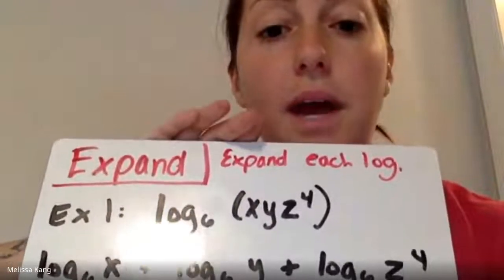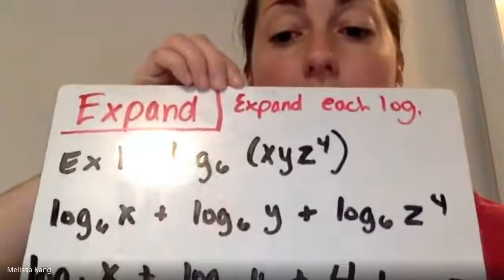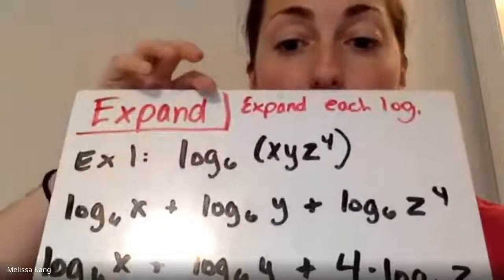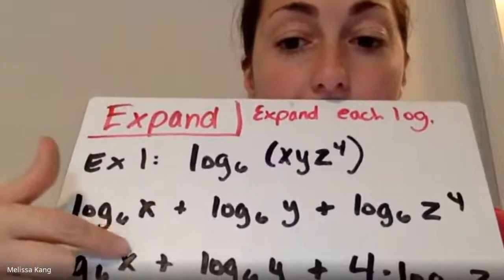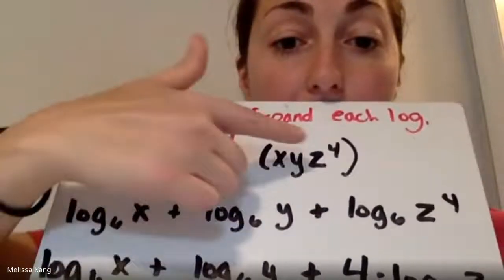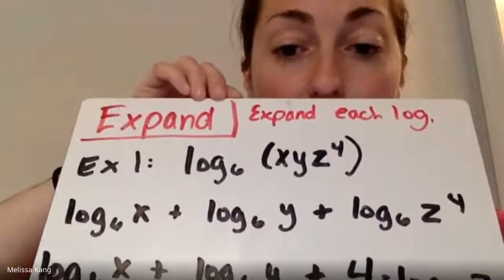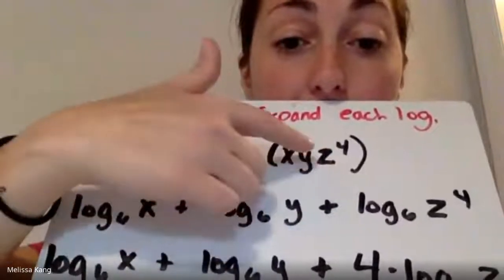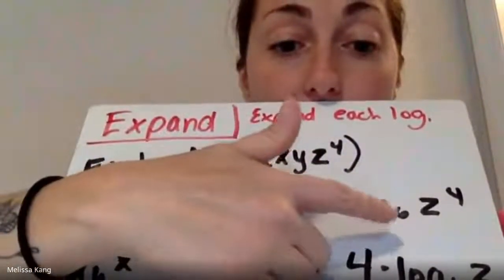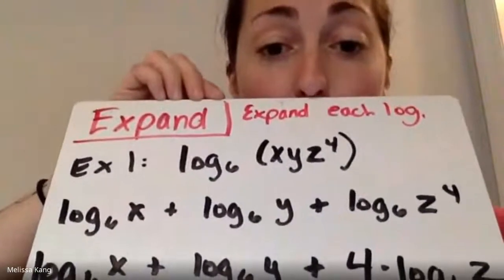So in order to expand that, I have to think of what the rule is for expanding when I multiply. How do I expand that? Oh yeah, multiply, I'll just add in between each log. So I have here log base six of x plus, because it's multiplication I can separate with that addition sign, log base six of y plus log base six of z to the fourth.